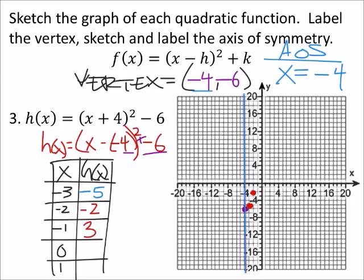So negative 1, 3. Then we got 0, 4 squared, minus 6 is 10. And this is our y-intercept. So that's 10. 1 plus 4 is 5 squared, is 25, minus 6 is 19. So 1, 19.